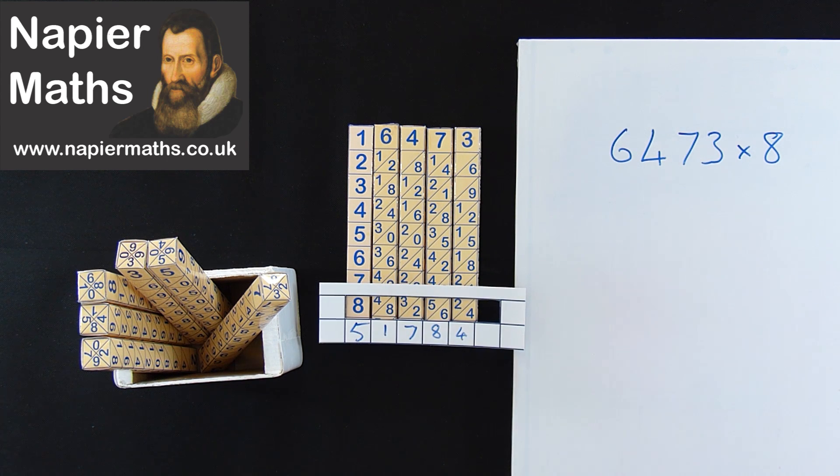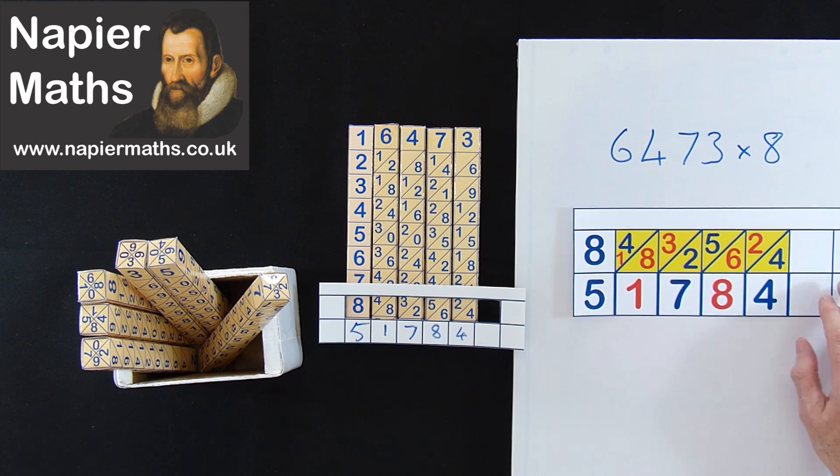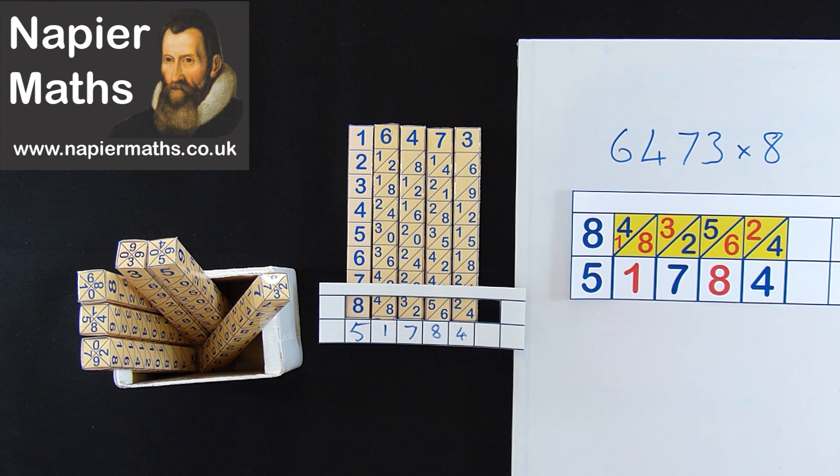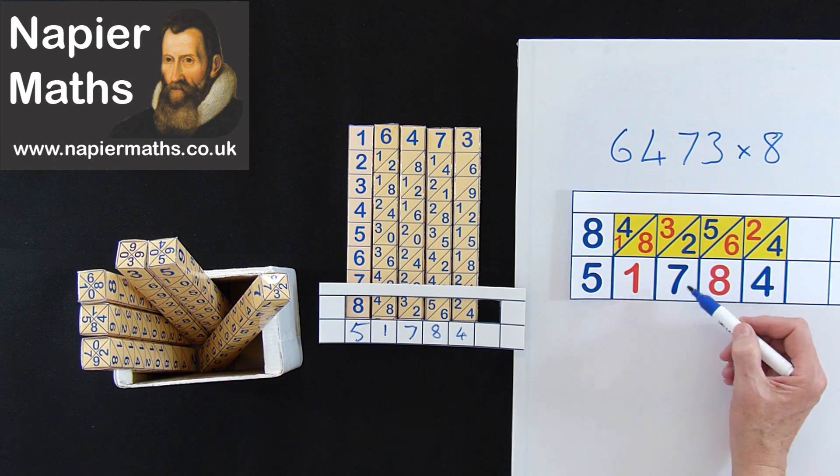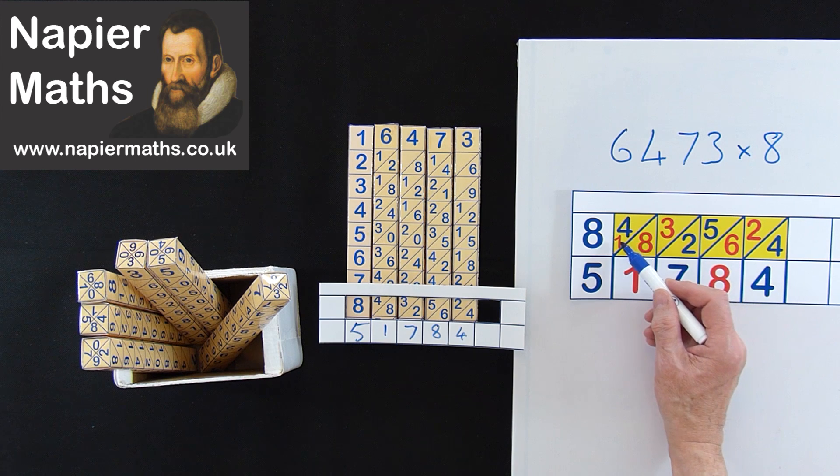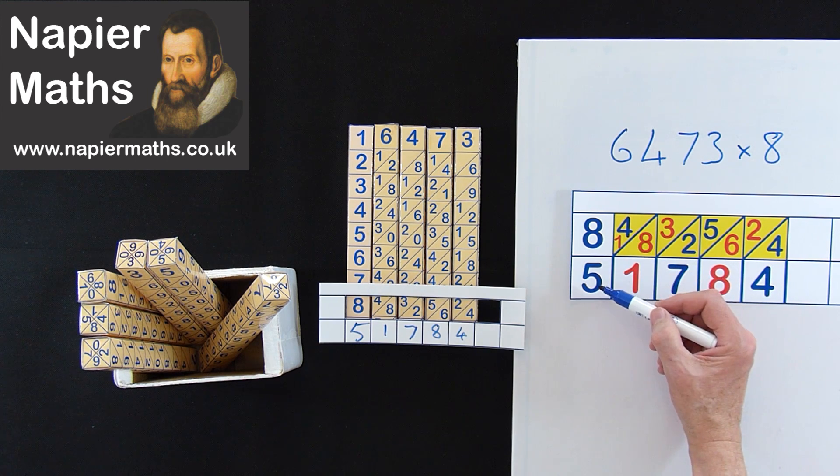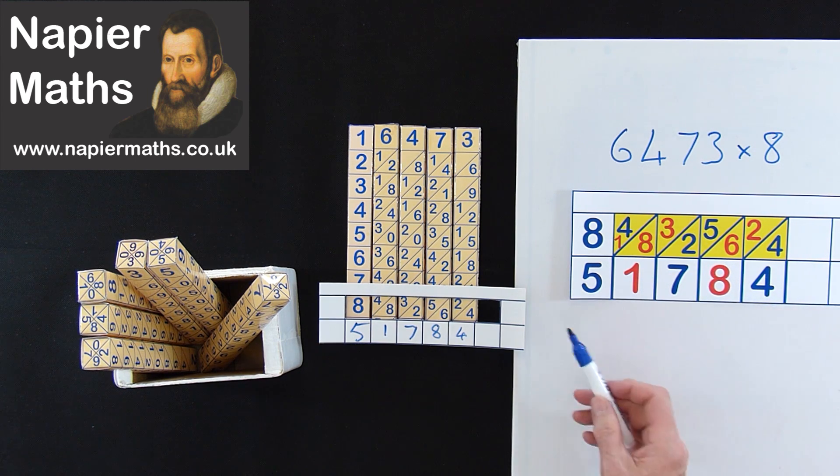Now I'll show it a bit bigger so you can see exactly where it's coming. I've used different colours so it's easier to see. The 4 there gives you 4. Then the next diagonal, 2 and the 6 is 8. 5 and 2 is 7. 3 and 8 is 11, 1 and we carry the 10. So you get 1 plus 4 is 5. And our final answer, 51,784. Really easy isn't it?